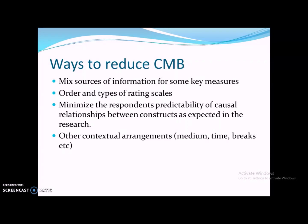The third way to minimize CMB is increasing the complexity of your research questionnaire, which makes respondents unpredictable about the causal relationships between constructs as expected in the research, by placing different breaks, styles, and ways of collecting information from your respondents.